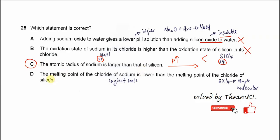And why is D wrong? The melting point of the chloride of sodium is lower than the melting point of the chloride of silicon. First, you need to understand the structure.